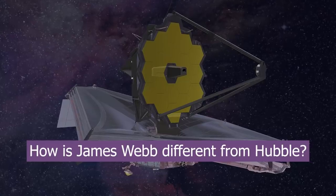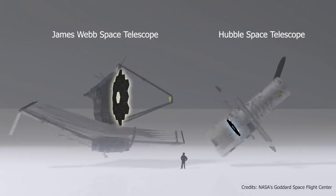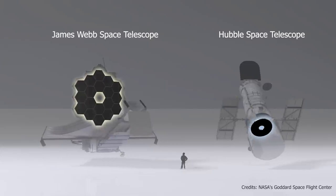How is James Webb different from Hubble? James Webb and its famous predecessor, the Hubble Space Telescope, have three main differences.